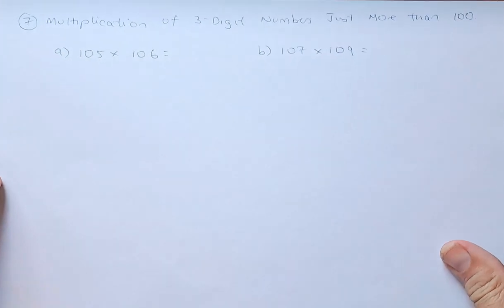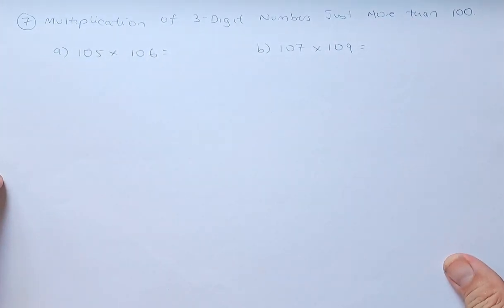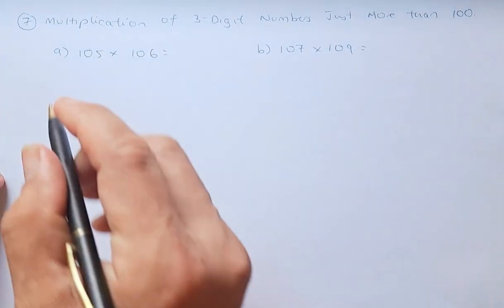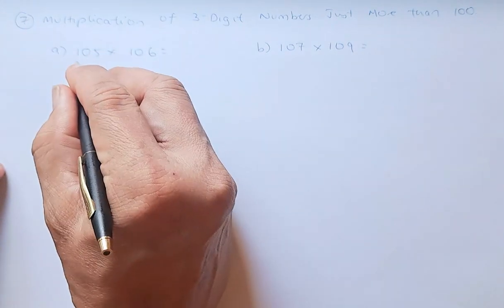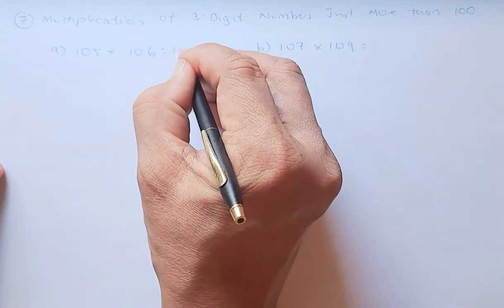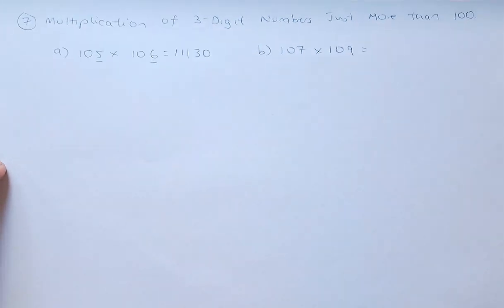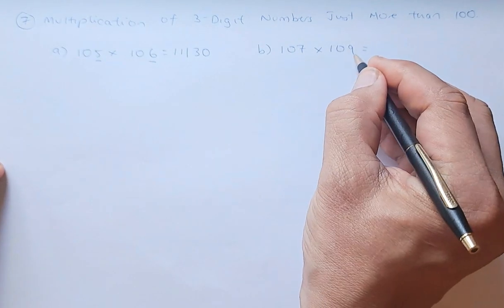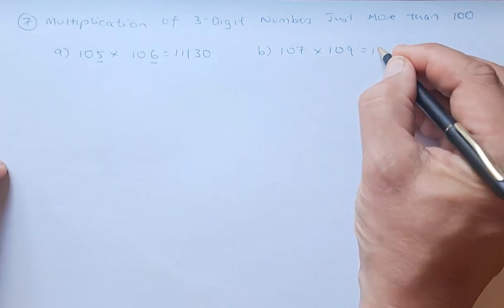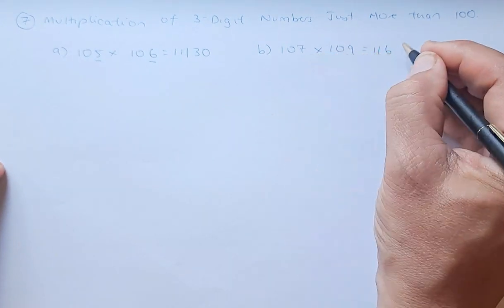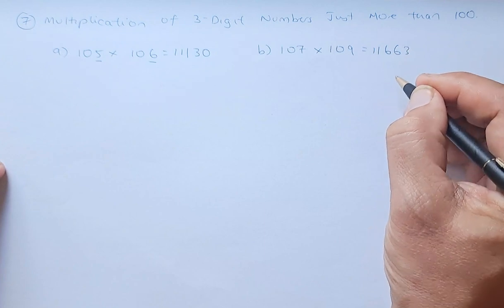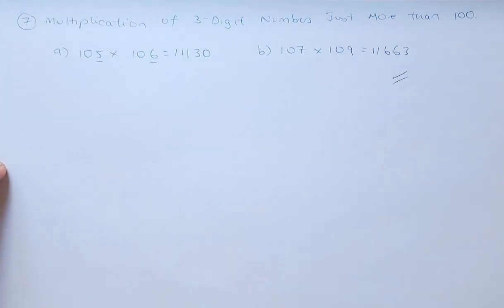Last but not least, we learn multiplication of 3-digit numbers just over 100 — this is the easiest method. For 105 times 106: add 6 to 105 to get 111, then 5 times 6 is 30, giving 11,130. For 107 times 109: add 9 to 107 to get 116, and 7 times 9 is 63, giving 11,663.